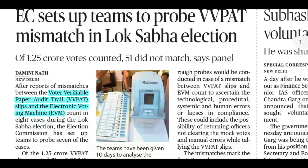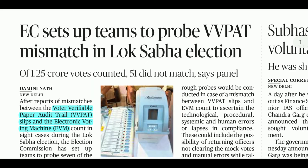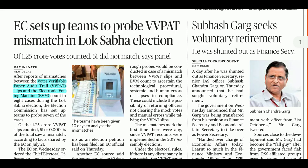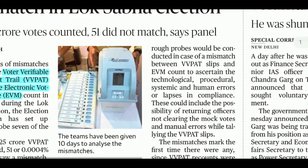Next is news about VVPAT — Voter Verifiable Paper Audit Trail. When we go to vote at an Electronic Voting Machine, after casting a vote, a VVPAT slip is printed showing which party you voted for and the voting number. It then goes into the box. After the election, a petition was filed and the paper audit trail slips were compared against the EVM count. There was a small discrepancy in 8 cases, showing a difference in numbers.